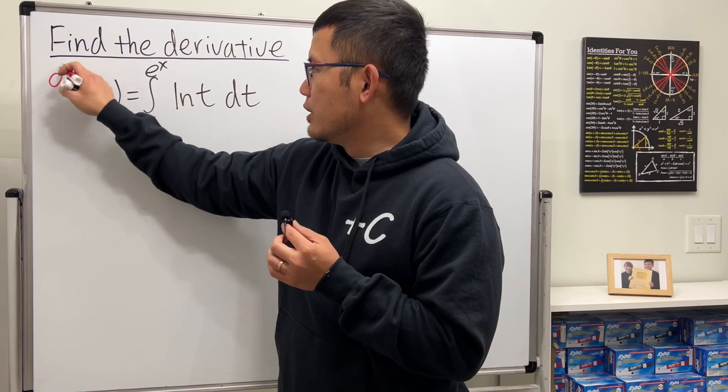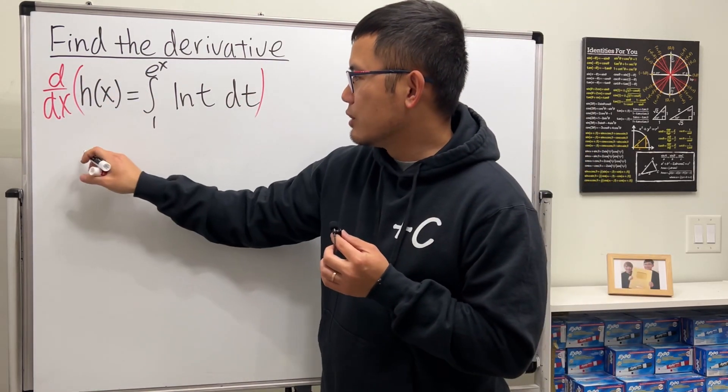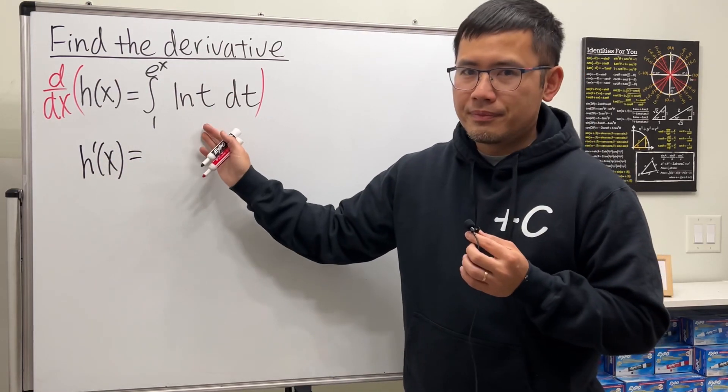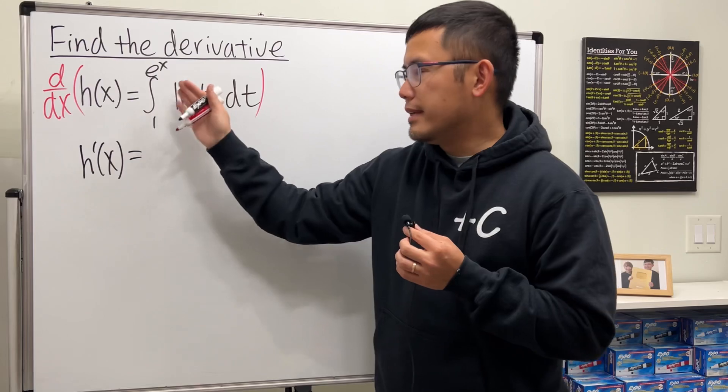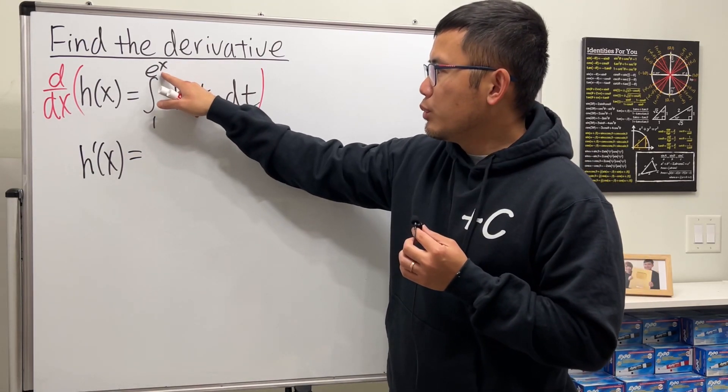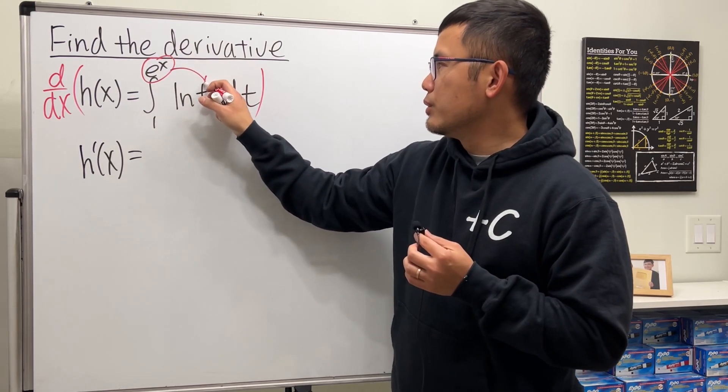This is h of x, so we differentiate this with respect to x. The left-hand side is just h prime of x, and the right-hand side, the derivative and integral cancel, and all we have to do is see, right here we have a function, e to the x.